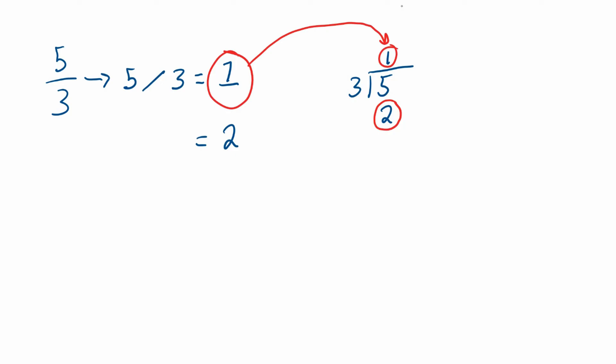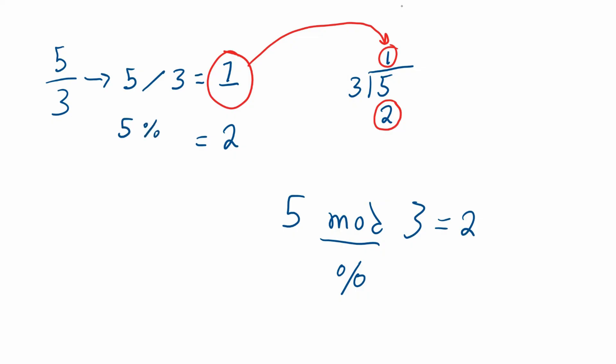So when we say five mod three, we're saying divide five by three and tell me what's the remainder. So this would be two. Now inside of the programming language, we do not use the word mod. Instead, we use the percent sign. I have no idea why — this is what they decided, they went with it, and it's what's being used everywhere. So five mod three looks like five percent three. That's the whole purpose of the modulus operator: to know what is the remainder after you complete a particular division.